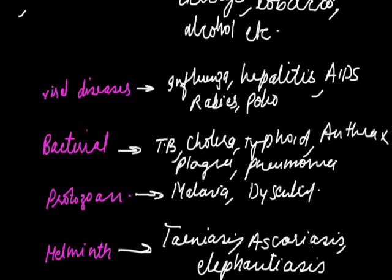The causative agents are as follows. For influenza: Myxovirus influenzae. For hepatitis: hepatitis virus. For AIDS: HIV. For rabies: Lyssa virus. For polio: poliovirus. Tuberculosis is caused by Mycobacterium tuberculosis. Cholera by Vibrio cholerae. Typhoid by Salmonella typhi. Anthrax by Bacillus. Plague by Pasteurella pestis. Malaria is caused by Plasmodium. Amoebic dysentery by Entamoeba histolytica. Teniasis by Taenia solium. Ascariasis by Ascaris. Elephantiasis by Wuchereria bancrofti.